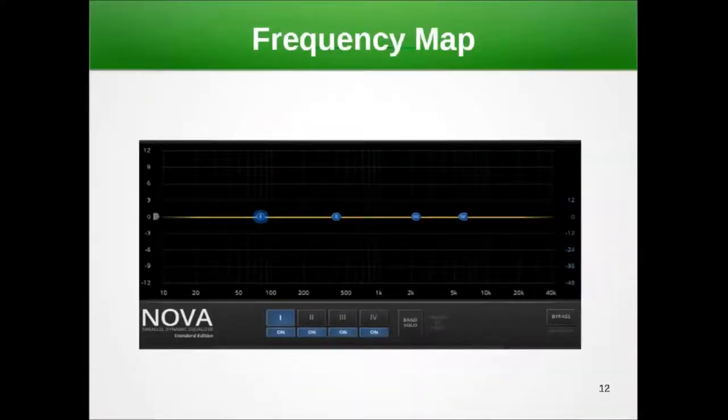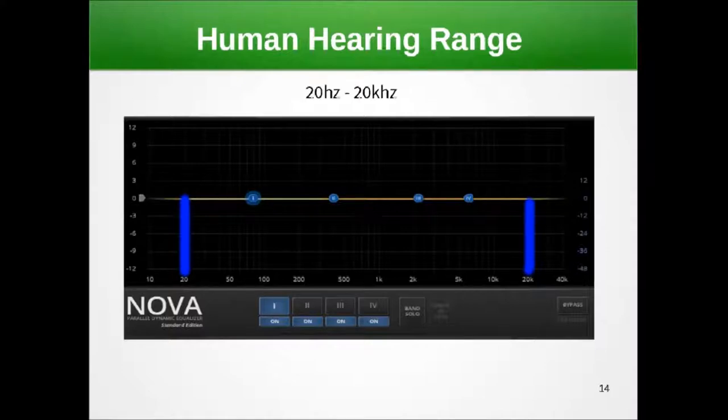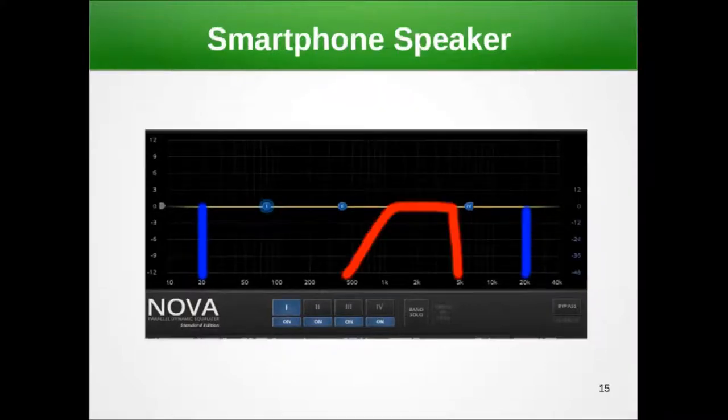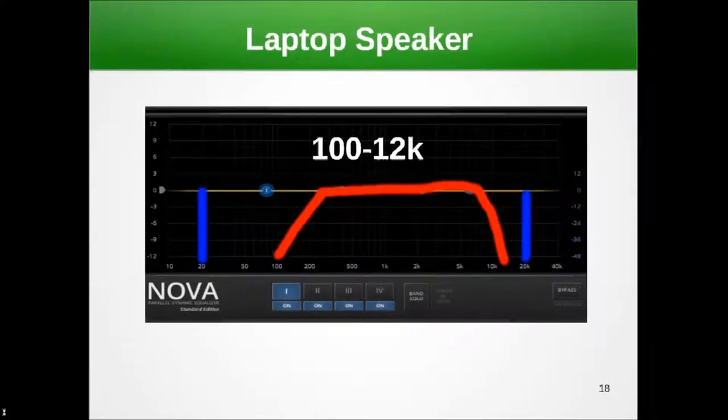Alright, so why are studio monitors so much better than your usual speakers? Let's look at a frequency map. It's a map of frequencies ranging from 10 hertz to 40,000 hertz. And the human hearing range is only 20 hertz to 20,000 hertz. So let's look at one of the worst speakers in the world, which is a smartphone speaker. Anything you're hearing out of the smartphone speaker is going to be pretty lousy. Because as you can see, the range is only from 500 to 5,000, a very narrow slice of what you can hear of the human hearing range. Laptop speaker is a little better, it's 100 to 12,000, still pretty lousy.